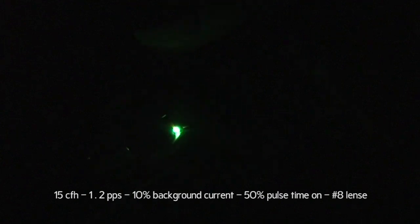Okay so for all these welds I am using ER70S2 filler rod 035. And for this first tube I'm running the number 8 gas lens at 15 CFH. I'm using 1.2 pulses per second, roughly that, 10% background current and 50% pulse time on.